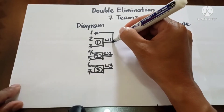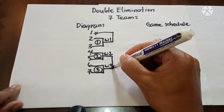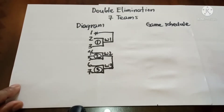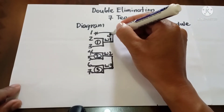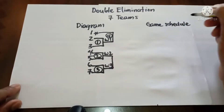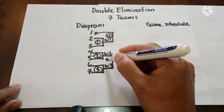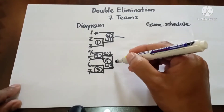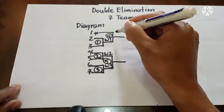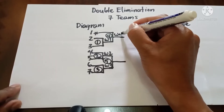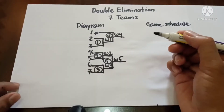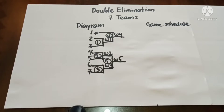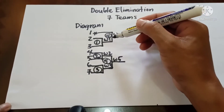The bye plays in the second round. Drawing the vertical lines from the top, Game 4 and Game 5. The results are Winner 4 and Winner 5. This completes the winner's bracket first two rounds.